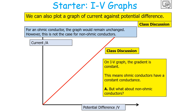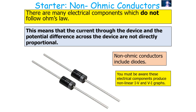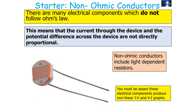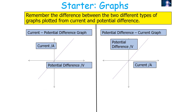Ohmic conductors have a constant conductance and a constant resistance, but what about non-ohmic conductors? There are many different electrical components which do not follow Ohm's law, meaning the current through the device and the potential difference across it are not directly proportional. An example of a non-ohmic conductor is a filament bulb. These components produce non-linear IV and VI graphs. Another example is a diode, and further examples include a light-dependent resistor and a thermistor.